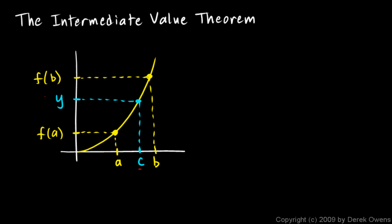Now that's what the theorem says. One thing to note is that the theorem is what we call an existence theorem. It says that this particular x value does in fact exist in this interval. It doesn't say where that x value is, and it doesn't tell us how to find it. It simply tells us that the x value does exist — that there will be some x value that, if we plug it into this function, we'll get out this y value.